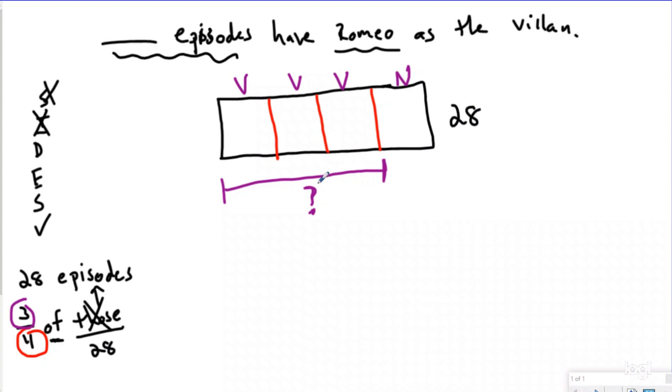Now, we know that fractions are actually division equations. And so really what you're doing here is you're doing 28, and you are splitting it into four equal groups. So 28 divided by four is a basic fact. Hopefully you know it. 7, which means there are seven in each of the four groups, and I want to know three of them. So 7 plus 7 plus 7, or 7 times 3 is 21. So 21 episodes have Romeo as the villain.